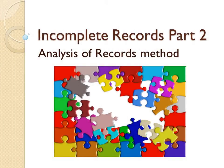In this chapter we talk about Part 2 of incomplete records, called the Analysis of Records Method. This is the second method of this chapter. Just like this jigsaw puzzle portrays, this particular method will require piecing bits of information together to form the complete picture.